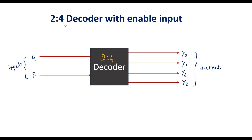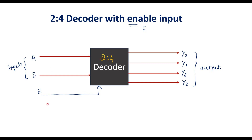Now we will consider the 2-to-4 decoder with an enable input. This is the 2-to-4 decoder circuit we have already studied. Sometimes there will be an enable input; in that case along with the two regular inputs there will be one more input known as the enable input, usually represented as E. I will explain how to draw the 2-to-4 decoder circuit with enable input.